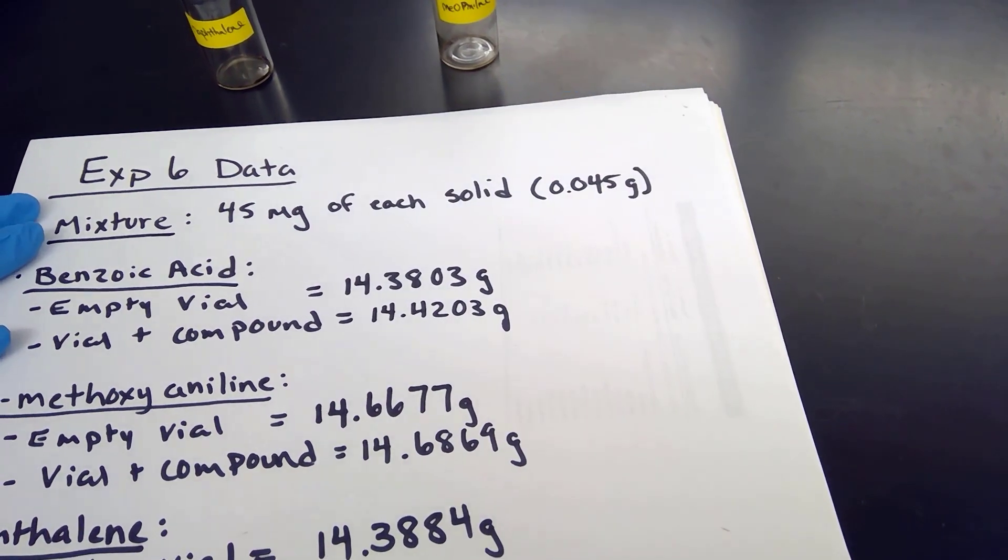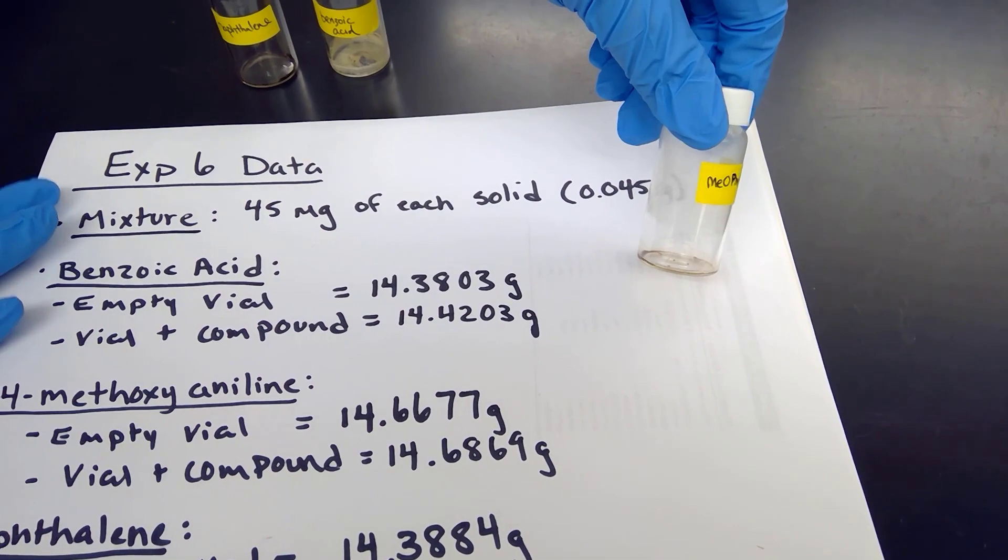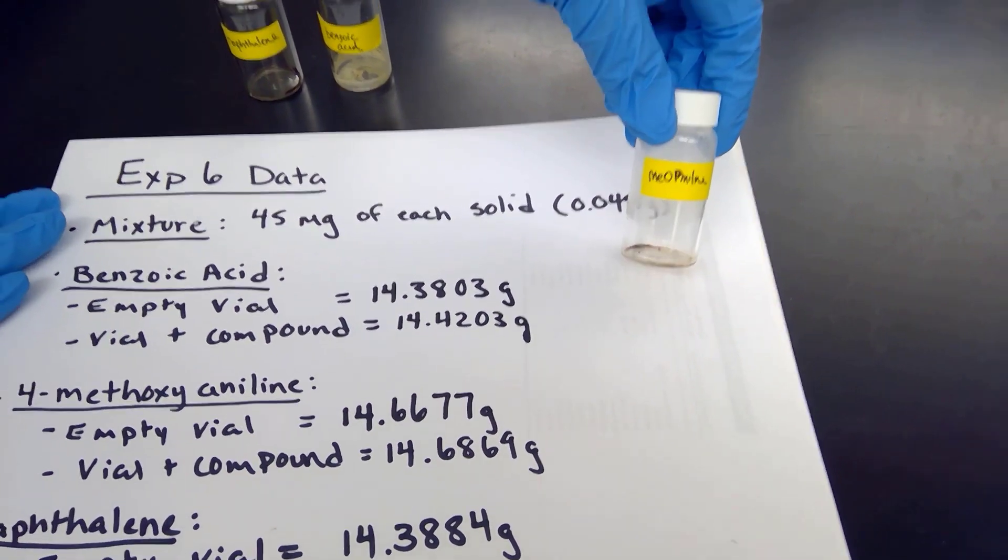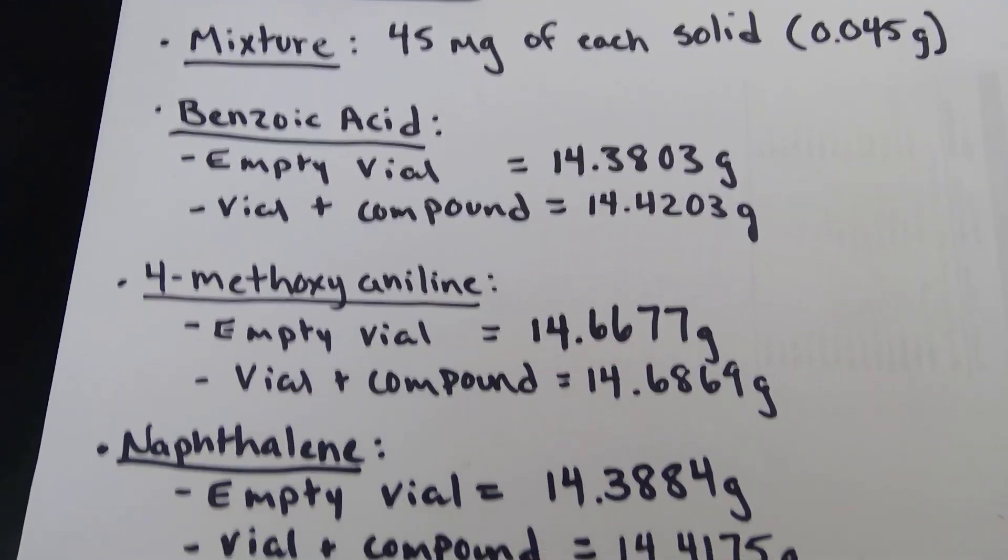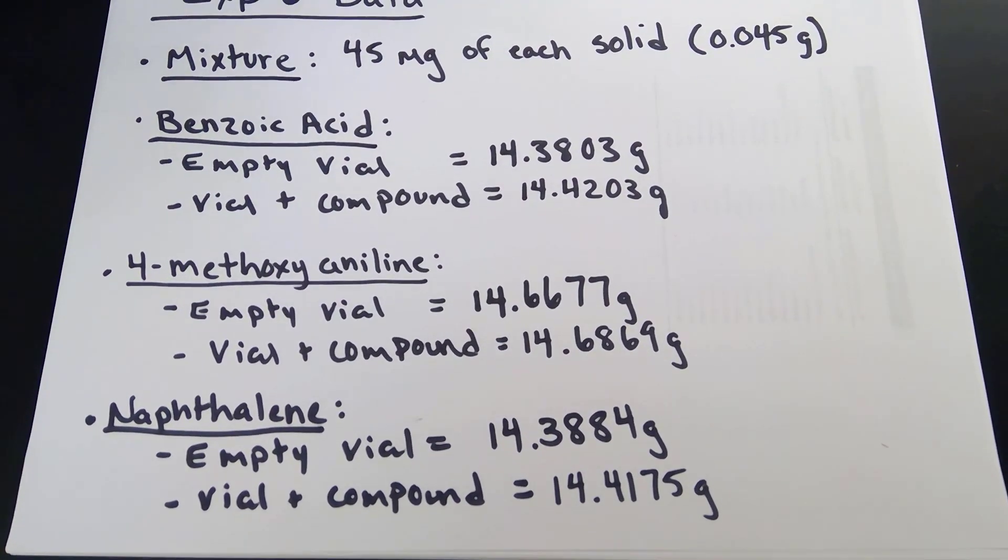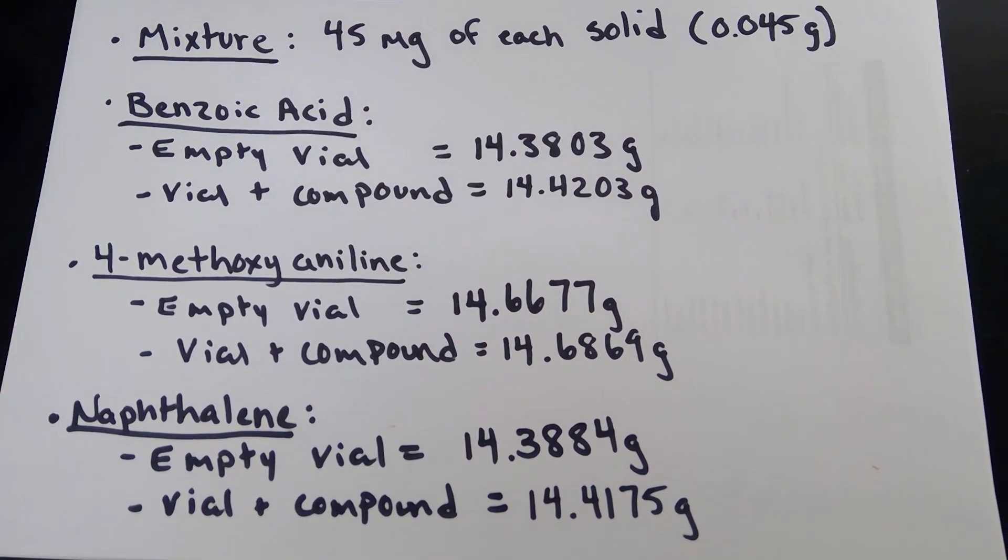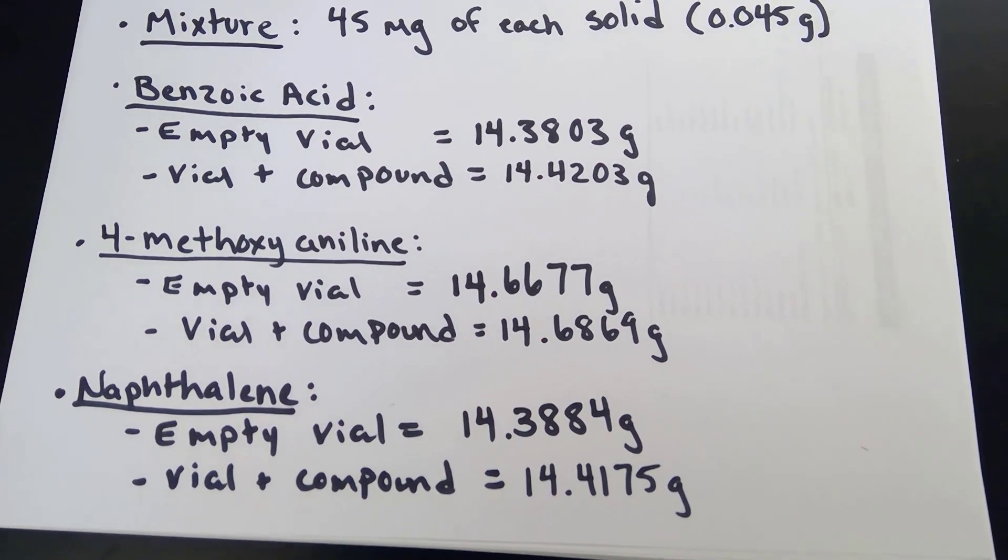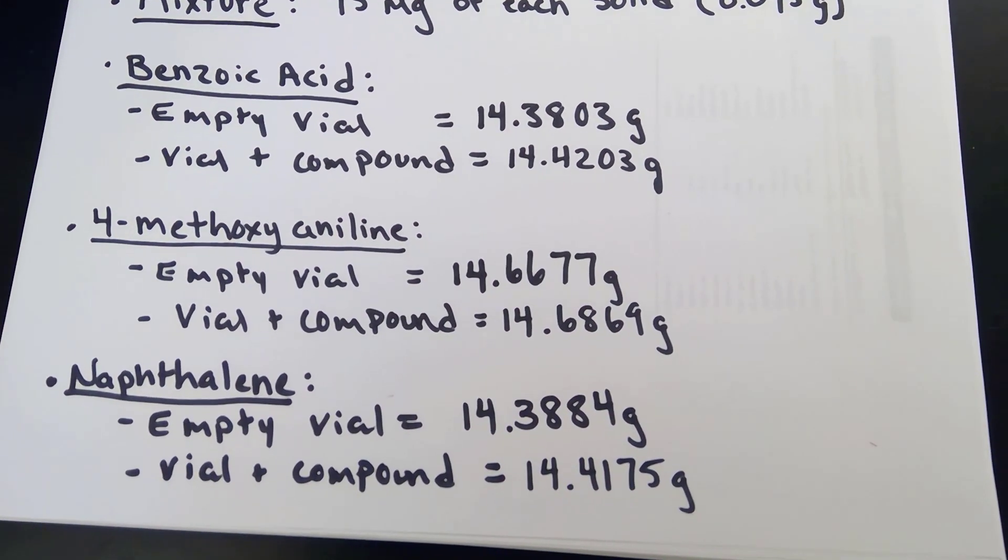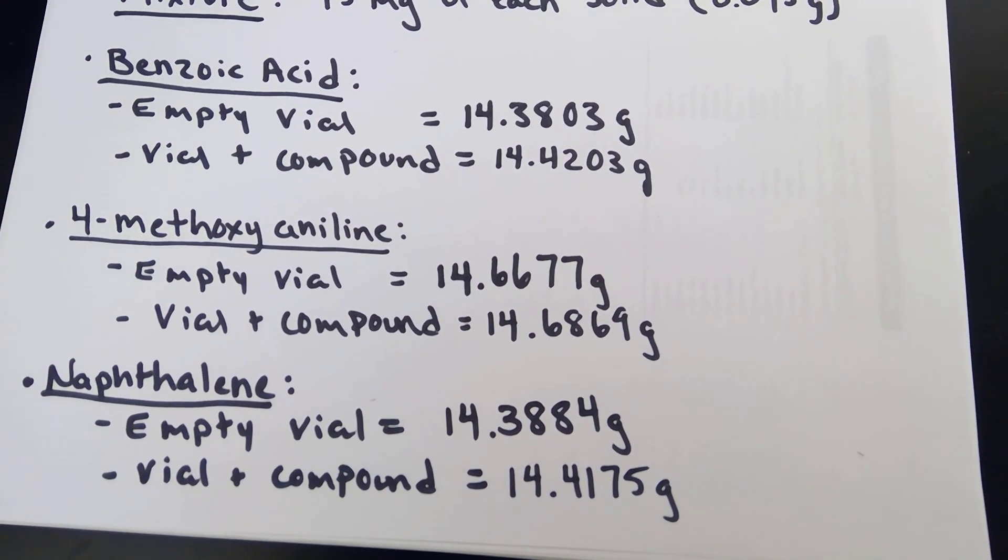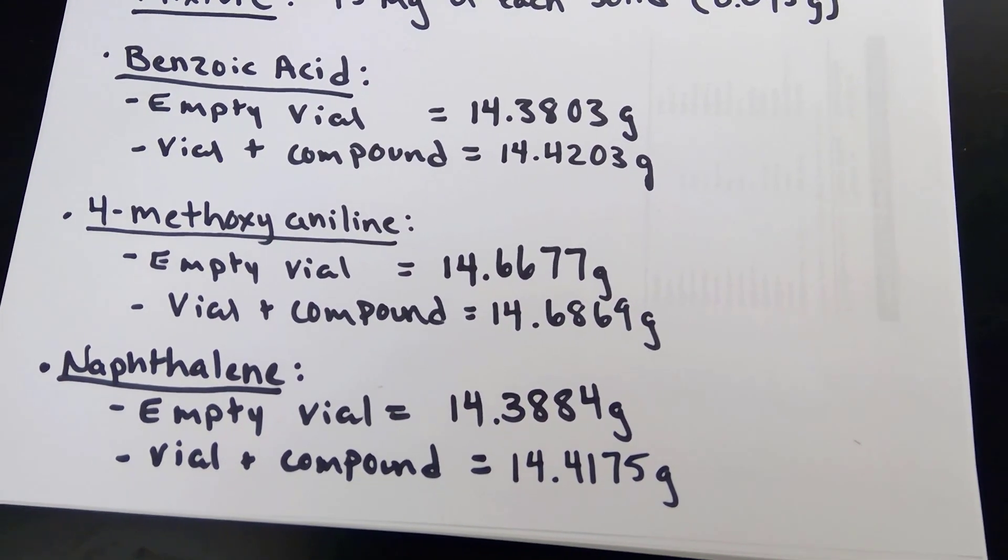It's got a slight tint to it. And then we have our 4-methoxy-aniline, which is also a dark solid. All right, so these three samples have been evaporated. We have the data here for you. So just to highlight, the mixture contained 45 milligrams of each of these solids. And here I listed that for you as 0.045 grams. And so our masses of the empty vial is provided for you, along with the mass of the compound plus the vial. Please do the appropriate mathematics to calculate the mass of solid that we have isolated for this experiment.